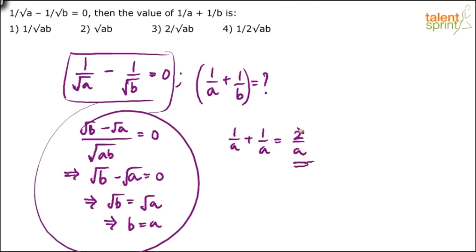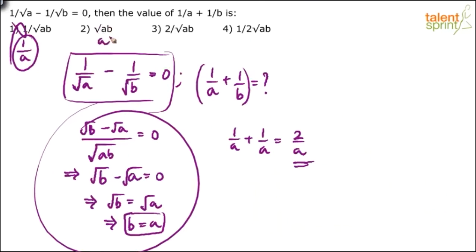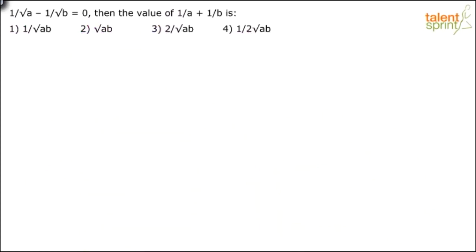The answer is 2 by A, but 2 by A is not directly in the options. Since B equals A, substitute A for B in each option. Option 1 gives 1 by root(A×A) = 1 by A — not our answer, eliminated. Option 2 gives root(A×A) = A — not 2 by A, eliminated. Option 3 gives 2 by root(AB) = 2 by root(A²) = 2 by A — this matches, so option 3 is correct.